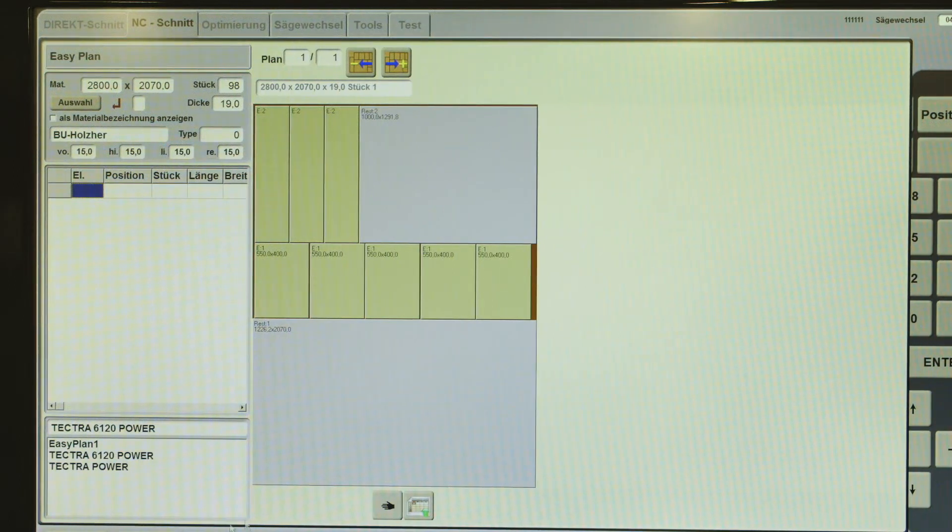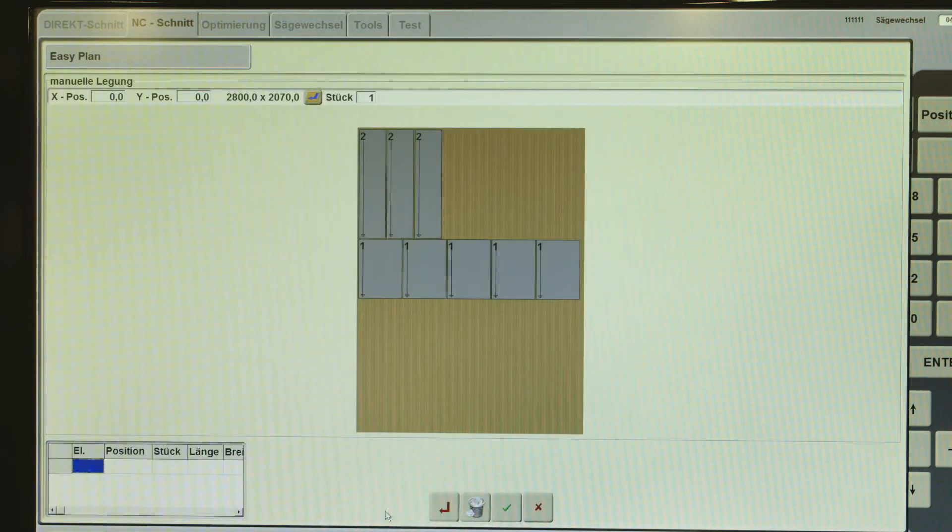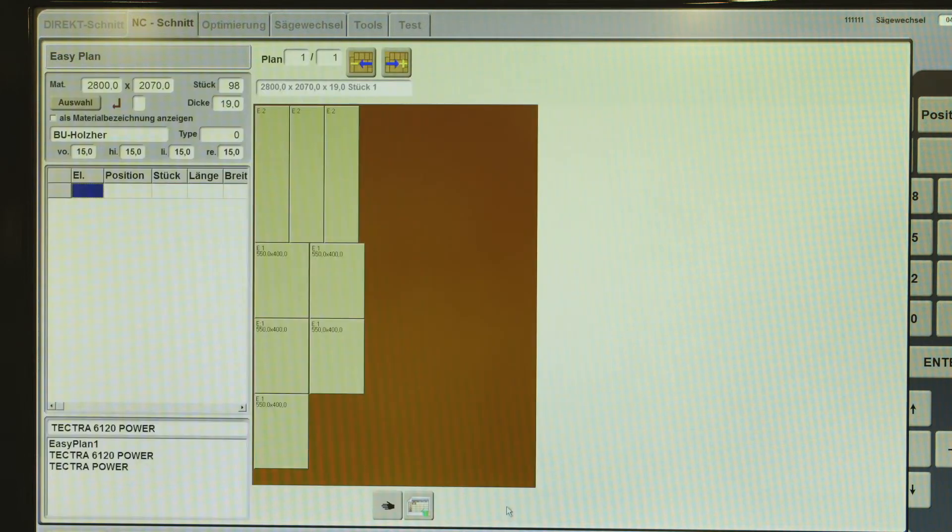All Holzhair beam saws are equipped with our Easy Plan optimization feature. The comprehensive Opti Cut software package available as an optional feature offers quick individual optimization, perfect machining and optimization of large job lists, perfectly matched to the material right at the machine.